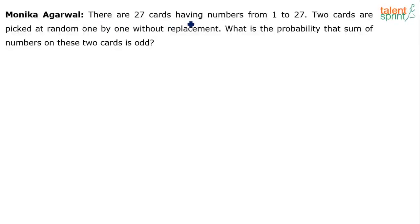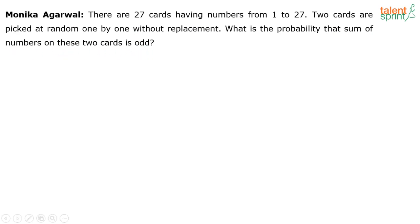There are 27 cards having numbers from 1 to 27. Two cards are picked at random one by one without replacement. What is the probability that the sum of numbers on these two cards is odd? An interesting problem from probability, posted by Monica Agarwal.